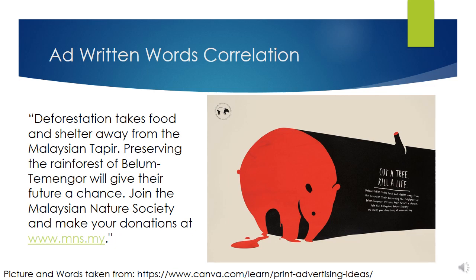Lastly, the ad goes on to say how the audience should donate to the Malaysian Nature Society. These words correlate well with the ad's drawings. In the drawing, a tapir is wrapped inside the tree, which shows how the tree shelters the animal. As the tree is cut, the blood flows from the tapir, showing how the tapir is living because of the tree and will die without it. So the audience is encouraged to make donations and join the Malaysian Nature Society.